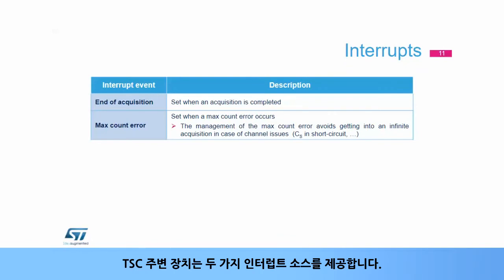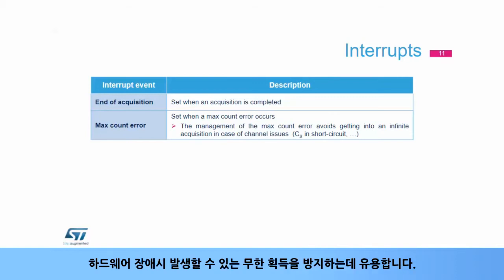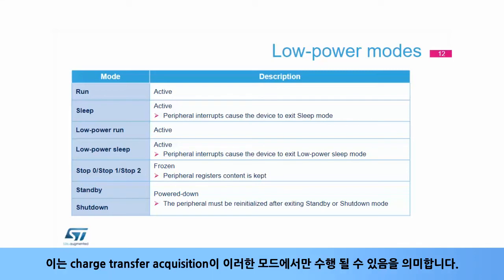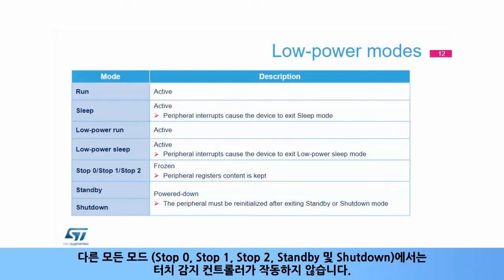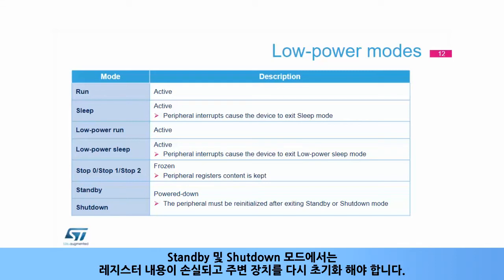The TSC peripheral offers two interrupt sources: end of acquisition, which notifies the CPU when all active channels are acquired, and max count error, which is set when the acquisition fails in one or several channels — useful for preventing an infinite acquisition in the event of hardware failure. The TSC is active in run, sleep, low power run, and low power sleep modes. In stop modes (stop 0, stop 1, stop 2), the peripheral is frozen but register content is kept. In standby and shutdown modes, the register content is lost and the peripheral must be re-initialized.